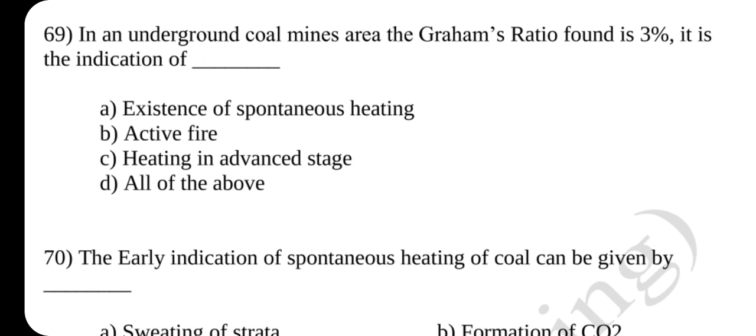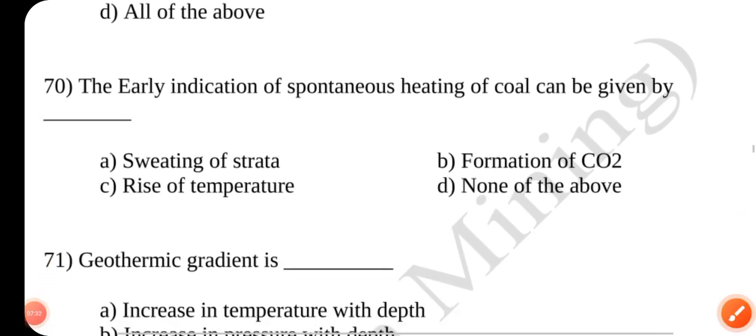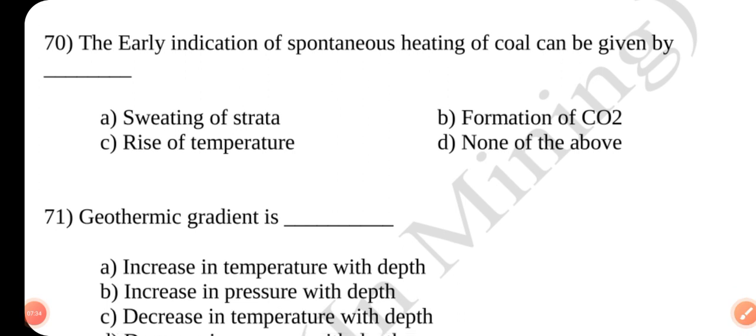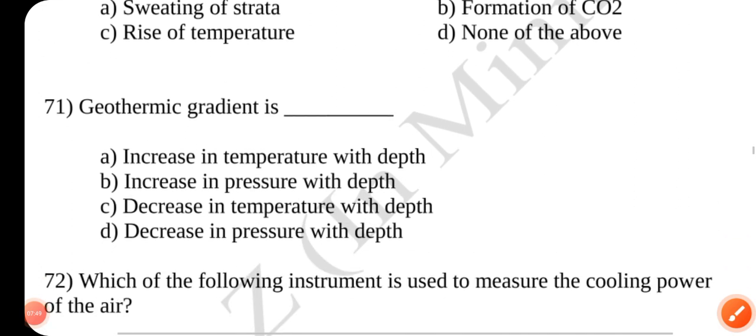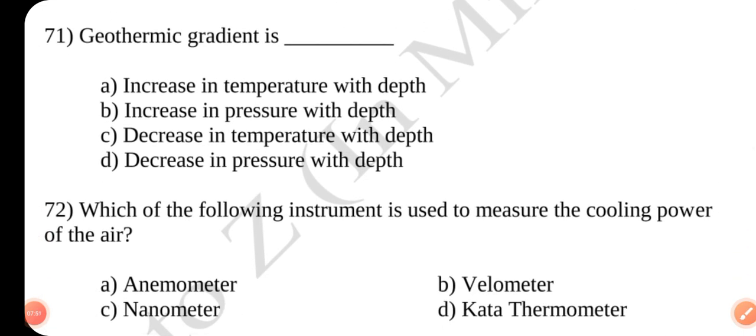Answer is B active fire. Question number 70. The earlier indication of spontaneous heating of coal can be given by dash. Answer is A sweating of strata. Question number 71. Geothermic gradient is dash. Answer is A increase in temperature with depth.